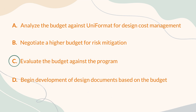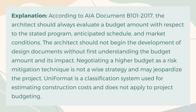The correct answer is C. Evaluate the budget against the program. Explanation: According to AIA document B101, 2017, the architect should always evaluate a budget amount with respect to the stated program, anticipated schedule, and market conditions. The architect should not begin development of design documents without first understanding the budget amount and its impact. Negotiating a higher budget as a risk mitigation technique is not a wise strategy and may jeopardize the project. Uniformat is a classification system used for estimating construction costs and does not apply to project budgeting.